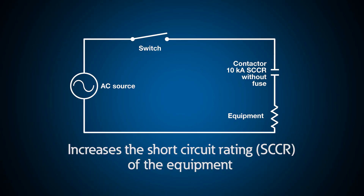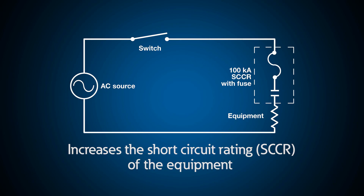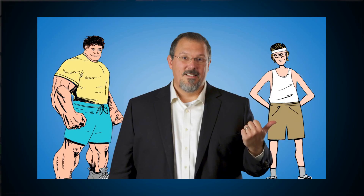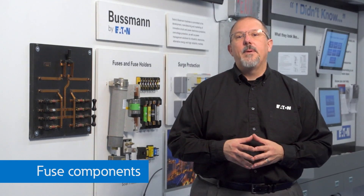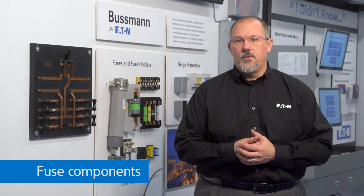When fuses are used ahead of equipment, they are often applied to increase the short circuit current rating (SCCR) of that equipment. This fundamental principle was discussed previously using a weight-lifter example. Let's now look at the components that make up a typical fuse.